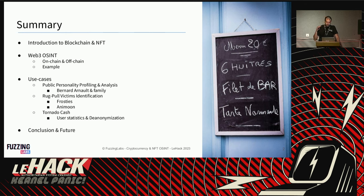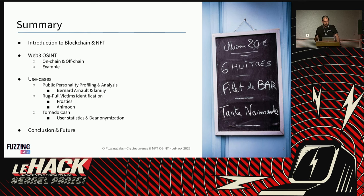We'll show use cases like profiling interesting people such as Bernard Arnault and the Arnault family, identifying victims of rug pulls, and de-anonymizing users of Tornado Cash — a mixer on Ethereum and other EVM blockchains. This is particularly relevant because Tornado Cash is considered money laundering by the US government, so using it could result in a lawsuit.